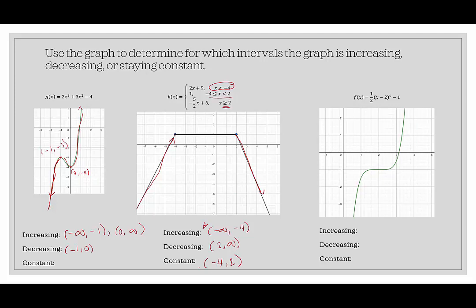From x = two onward, the graph is going down — it is decreasing from two to infinity. You can notice the connection between what the piecewise function gives us and interval notation: each piece corresponds to where the function is increasing, decreasing, or constant. That works out here because all the pieces are linear functions.